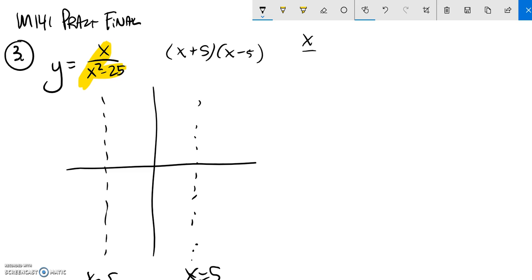So x over x squared reduces to 1 over x, so this essentially grows without bounds. Wait, sorry, it's 1 over x.